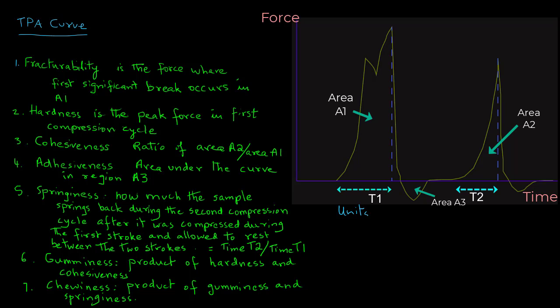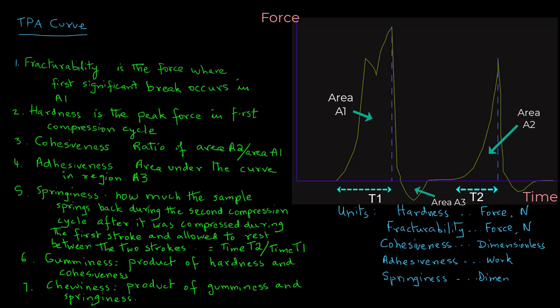We can also look at the units for these quantities. For hardness and fracturability, the units will be force. Cohesiveness is a ratio, so it's a dimensionless number. Adhesiveness is the area under the curve and the units will be in terms of work. The units of springiness, again, it's a ratio, so the units are dimensionless. And for gumminess, the units are force. And for chewiness, again, the units will be force.